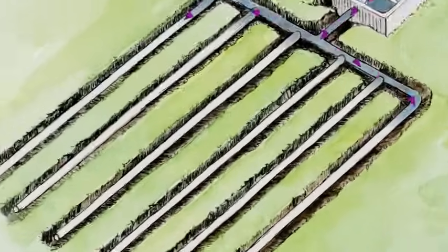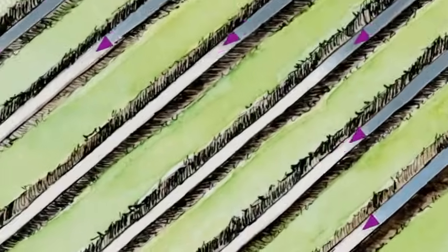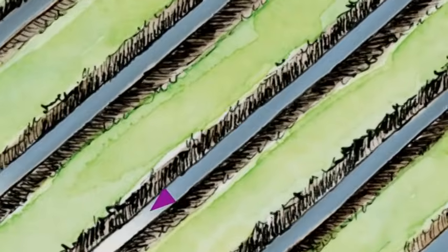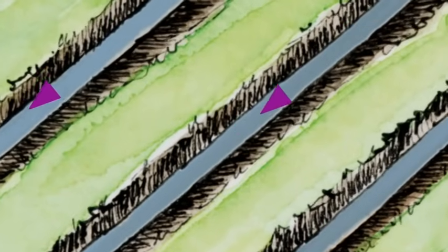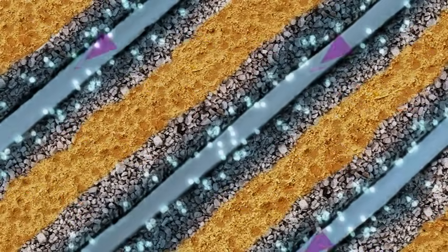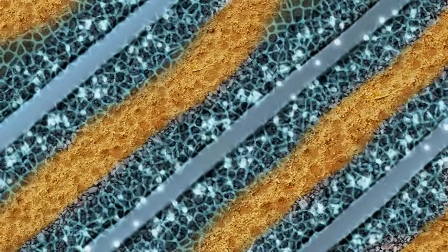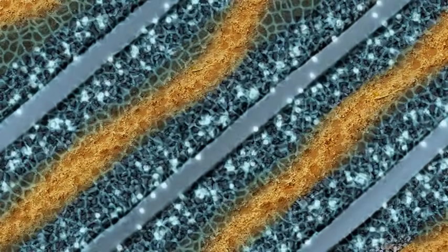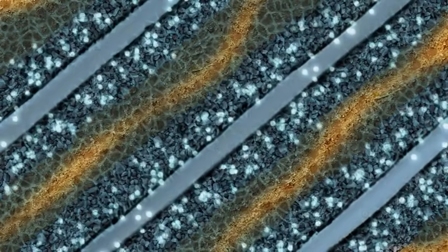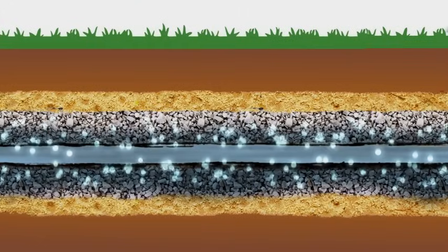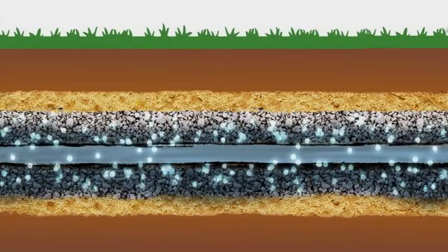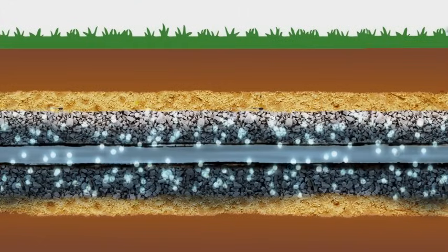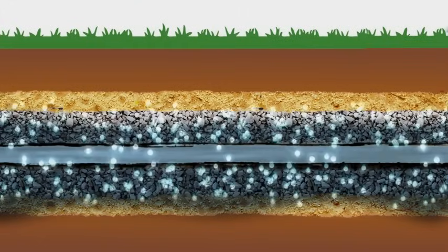The leaching bed is made up of a network of perforated polyvinyl chloride drain pipes. These PVC pipes disperse the effluent, allowing the liquid to seep into the ground where bacteria and other organisms continue to break it down, and where it is further filtered by the stone and sand that surround these pipes and the soil below.